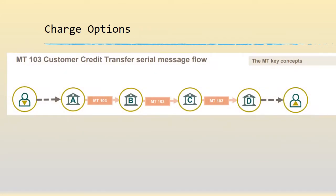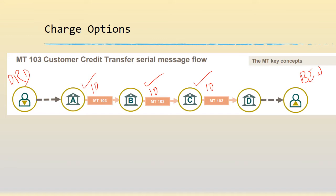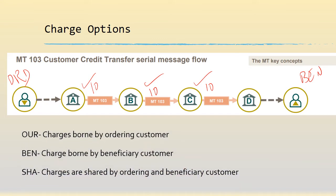So what are the different charge options available when you do a payment? Let's take a simple example wherein we have an ordering customer transferring funds to a beneficiary via a payment chain consisting of bank A, B, and C. Let's assume that bank A takes a 10 USD charge, bank B 10 USD, and bank C 10 USD. The various options are OUR, BEN, and SHA.